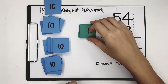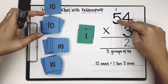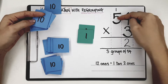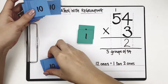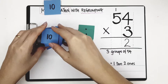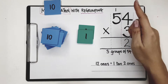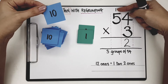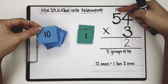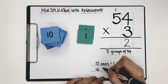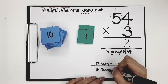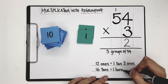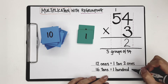Now let's go to the tens. I have 5 tens in 54, and if I want 3 groups of 5 tens, that gives me 15 tens. We need to add that 1 ten that we regrouped just now, so altogether I have 16 tens.